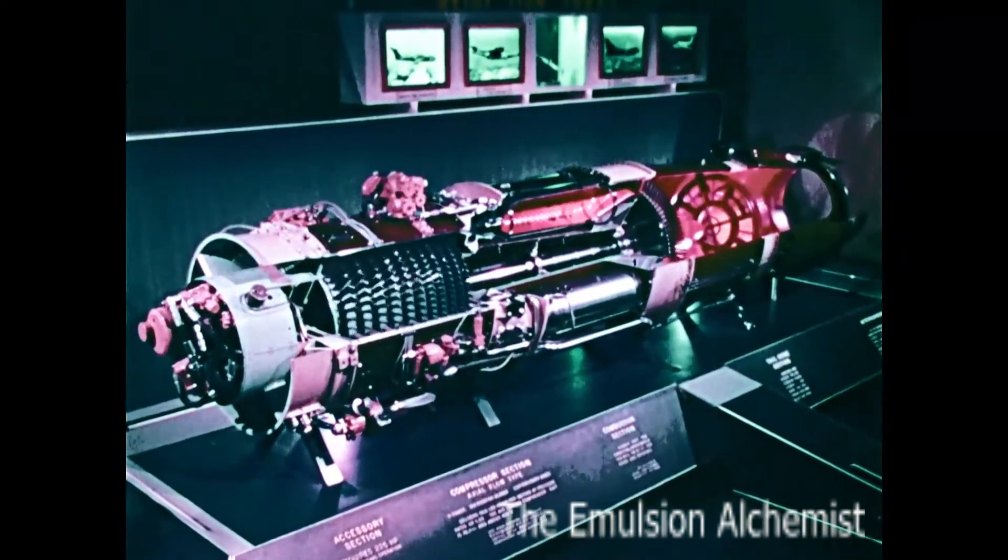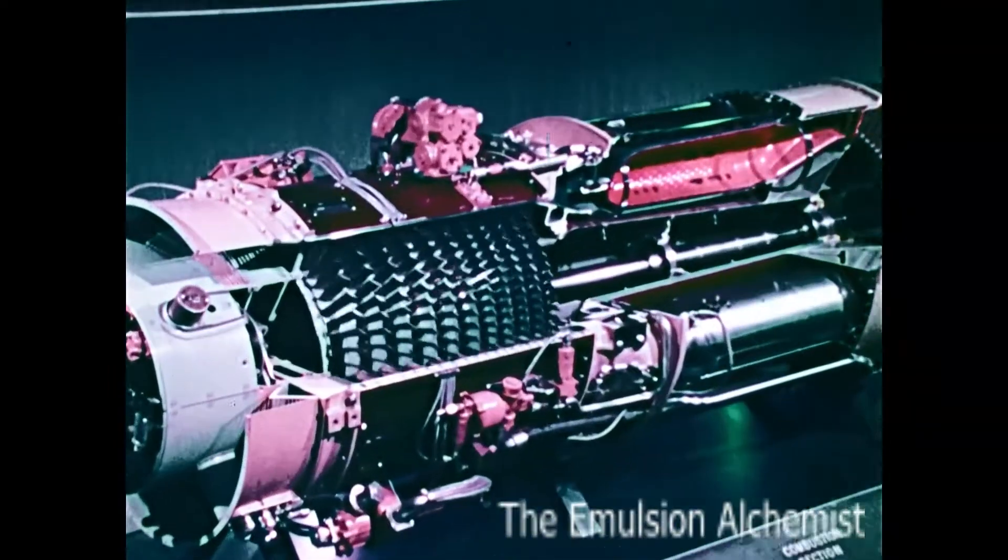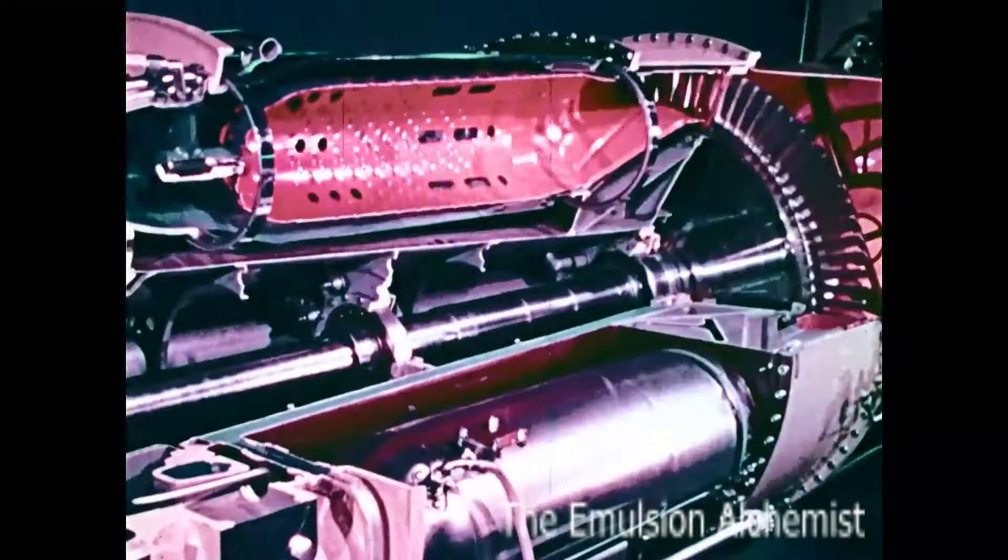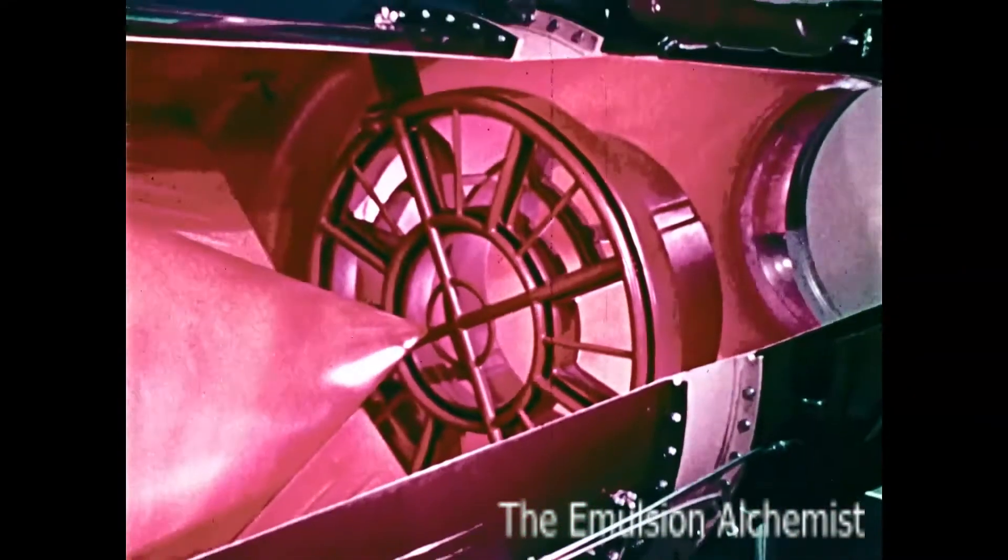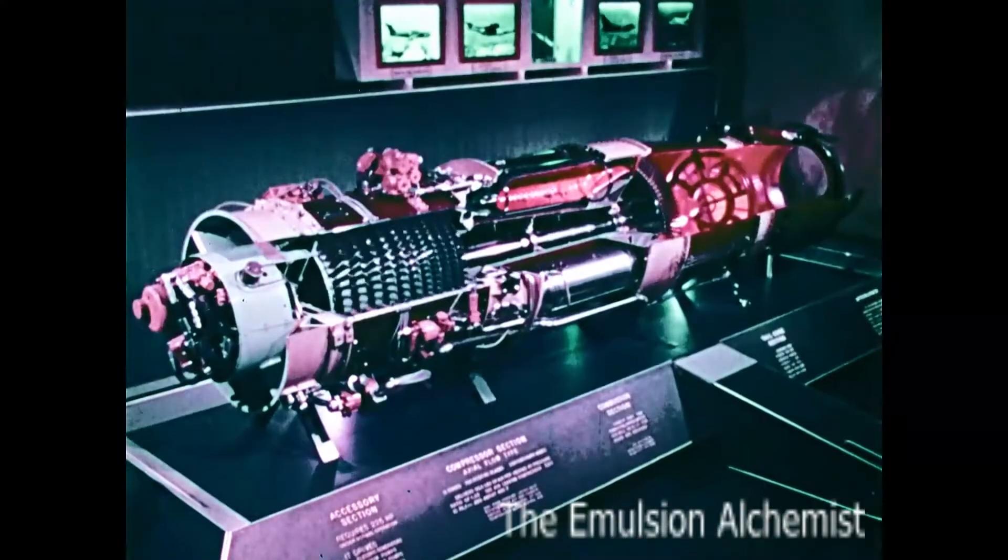Turbojet components are easily recognized: compressor, combustion chambers and turbine, and tailpipe. Together, they provide the thrust that drives the airplane.